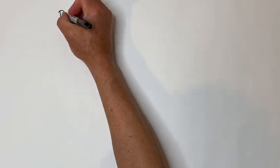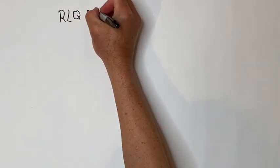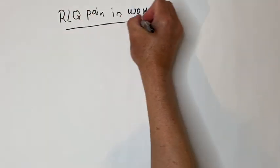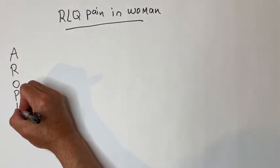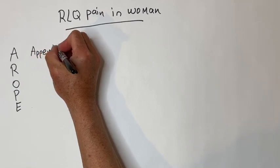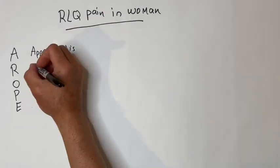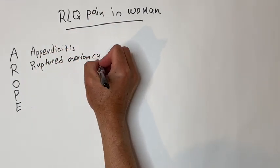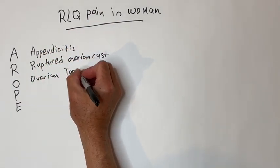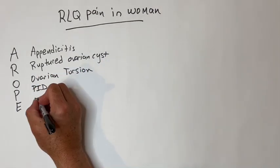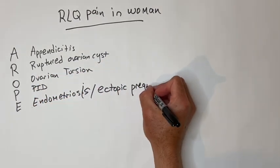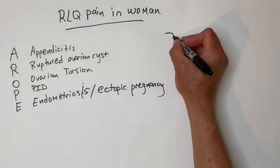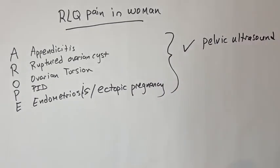The differential diagnosis for right lower quadrant pain in a woman uses the mnemonic AROPE: appendicitis, ruptured ovarian cyst, ovarian torsion, PID, endometriosis, and ectopic pregnancy. So also consider pelvic ultrasound and always do a pregnancy test in a woman of childbearing age.